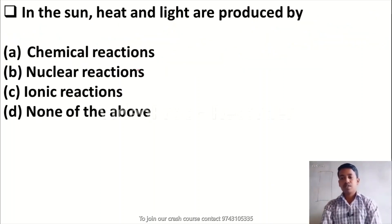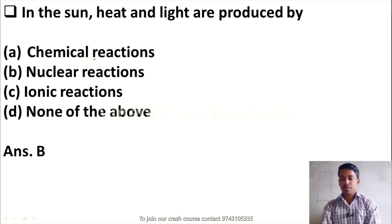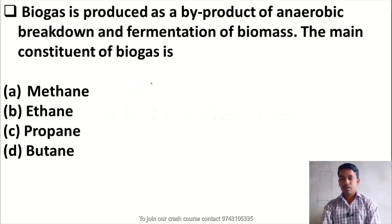In the sun, heat and light are produced by: Option A, chemical reactions; Option B, nuclear reactions; Option C, ionic reactions; Option D, none of the above. Here the correct answer is Option B — nuclear reactions is the correct answer.